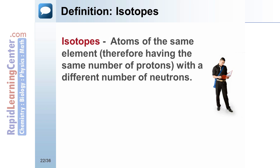Isotopes are atoms of the same element, therefore they have the same number of protons. However, they have differing number of neutrons.